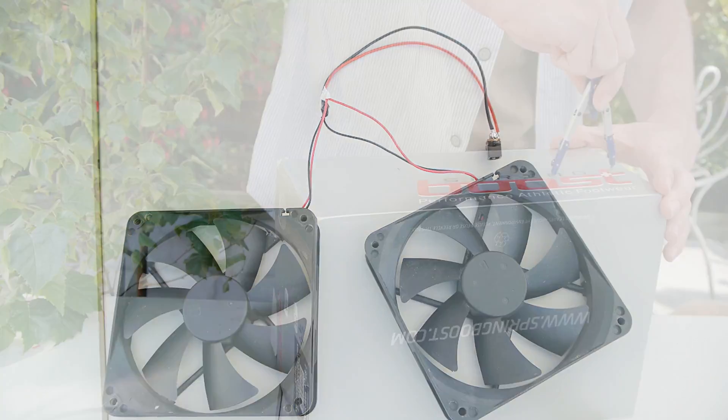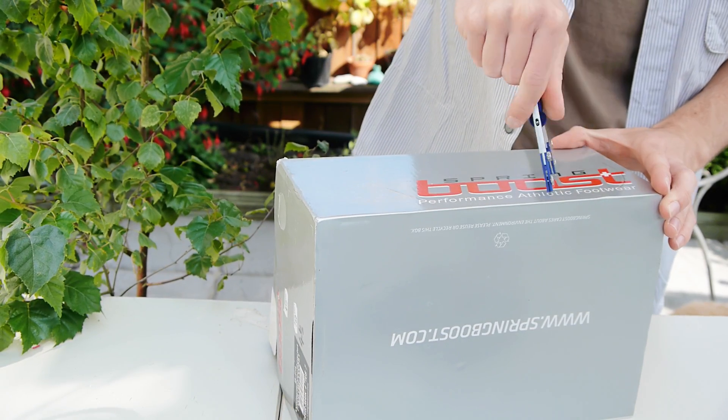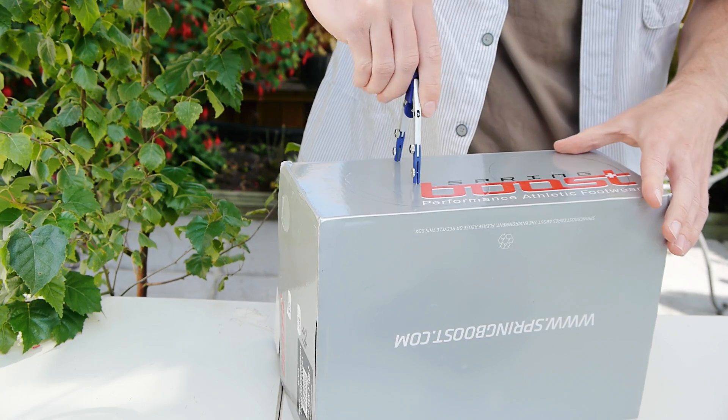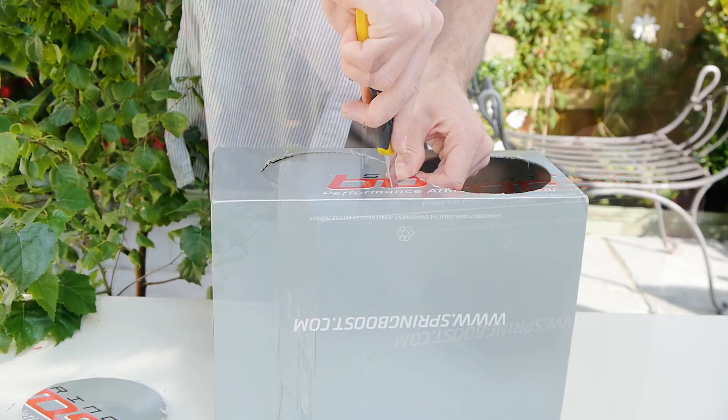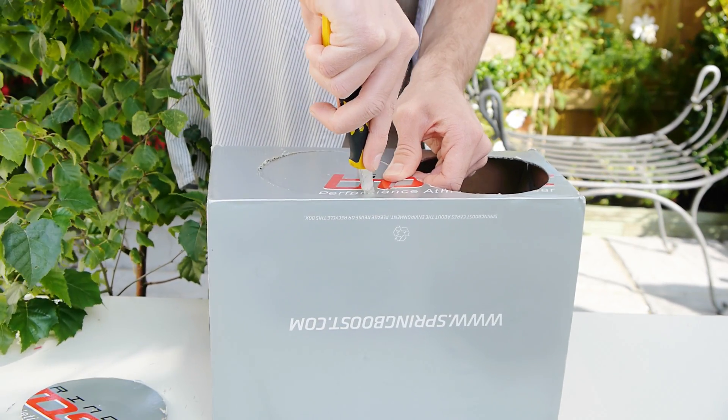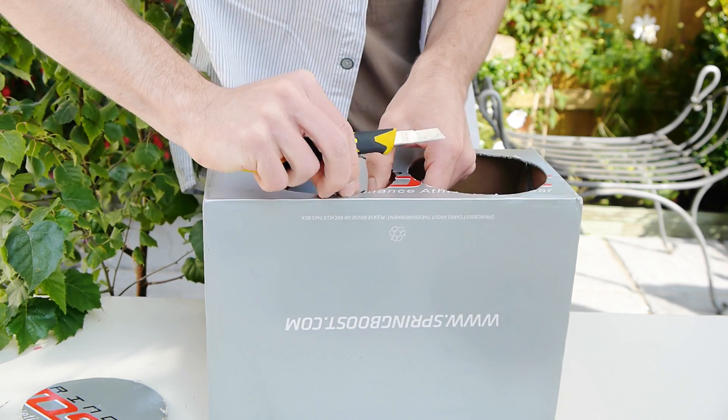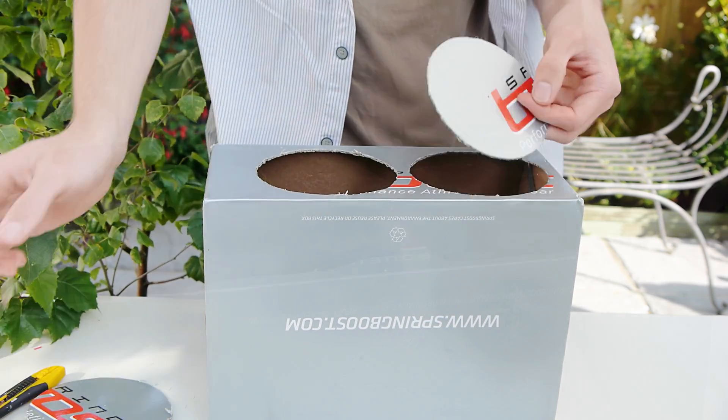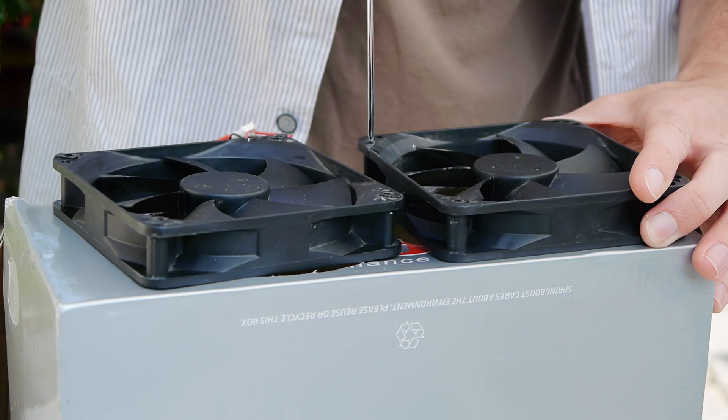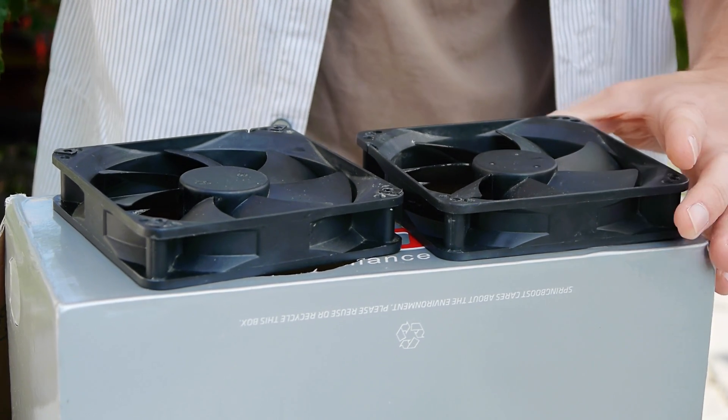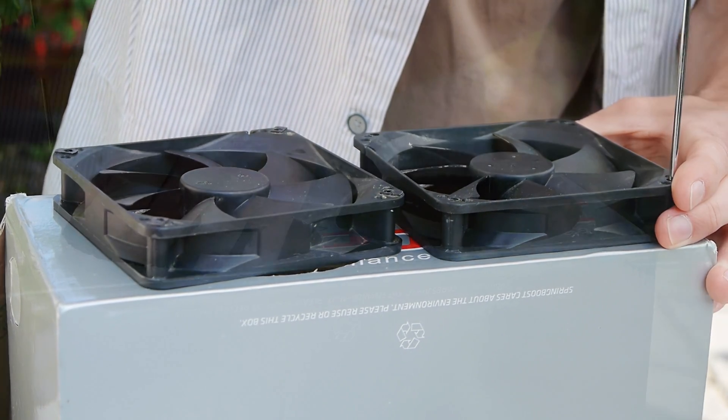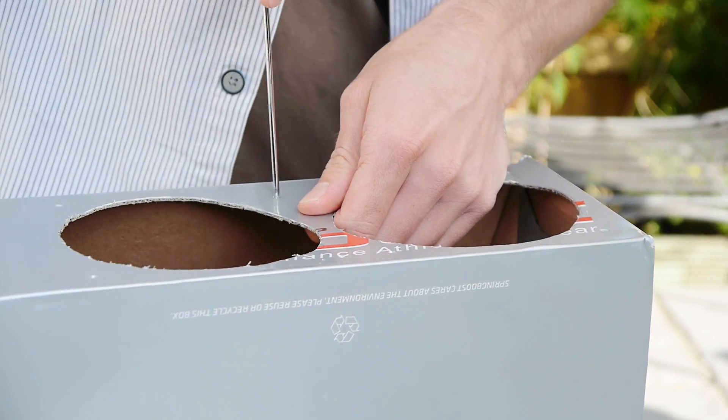We'll now mark out two 115mm holes for the fans on the side of the shoebox using a compass, and then cut them out using a knife. We're going to be mounting the fans on the inside of these holes using screws, so we need to use a small crosshead screwdriver to first mark the hole points of the fans and then punch right through afterwards.